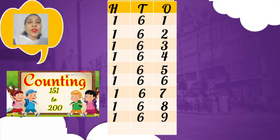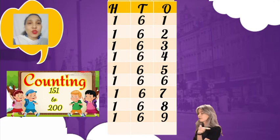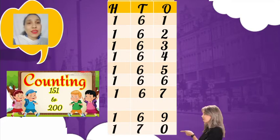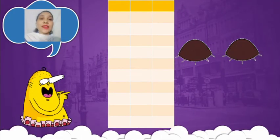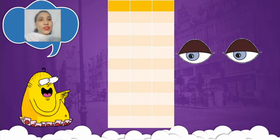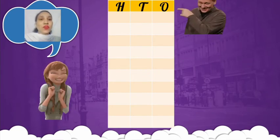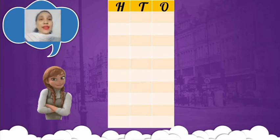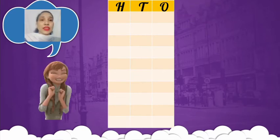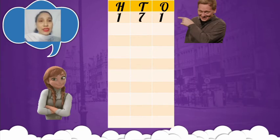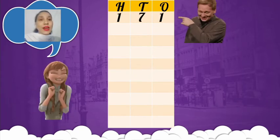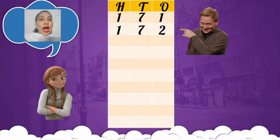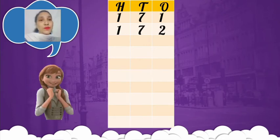Now I have to write down 170. Now we will start the next line of counting. Firstly, you have to write down hundreds, tens, and ones on the top of the counting. The next number after 170 comes 171, next number will be 172.